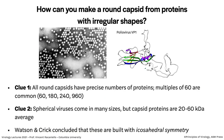Now let's make spherical virus particles. How do you make a round capsid from proteins that are not round? Poliovirus in the electron micrograph looks round, but the viral protein VP1 that makes up the capsid is not spherical. Watson and Crick led the way: clue one — all round capsids have precise numbers of proteins, typically multiples of 60, like 180, 240, or 960.